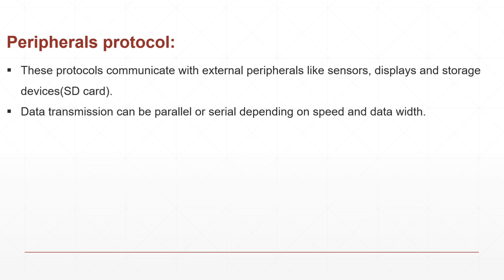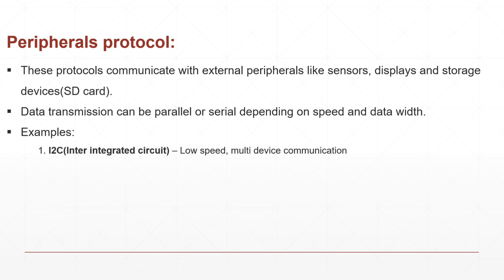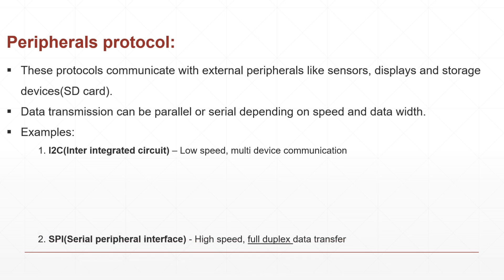In the peripheral protocol category, data transmission can be parallel or serial — it depends on the speed and data, meaning how much data you are sending and what data bits you are using. Examples under peripheral protocols include I2C (Inter-Integrated Circuit), which is used whenever you need low-speed and multi-device communication. Next is SPI (Serial Peripheral Interface), used for high-speed full-duplex data transfer.